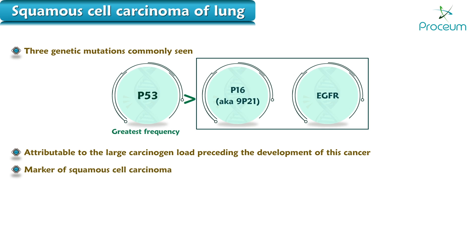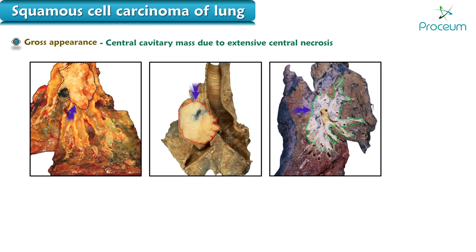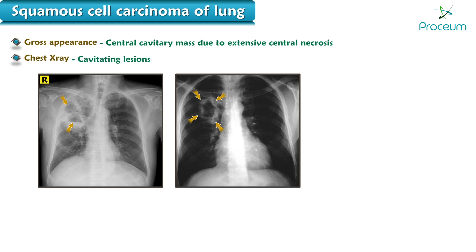The markers of squamous cell carcinoma are cytokeratin, p40, and p63. The gross appearance of squamous cell carcinoma of the lung is often a central cavitary mass due to extensive central necrosis. It often appears as cavitating lesions on a chest x-ray.